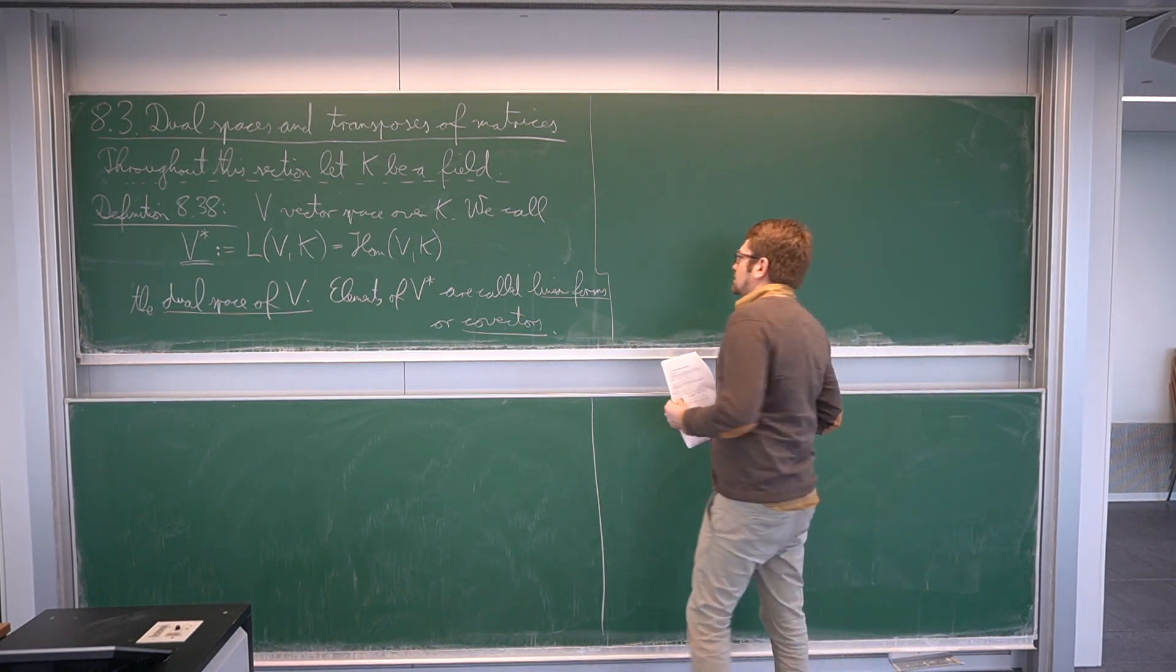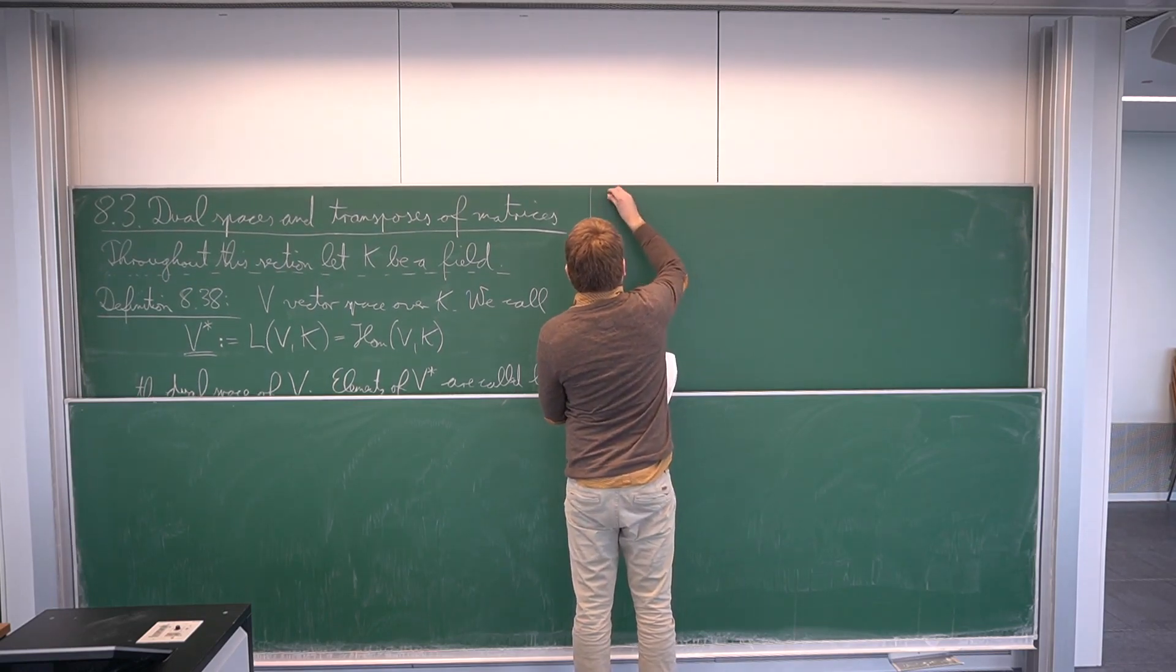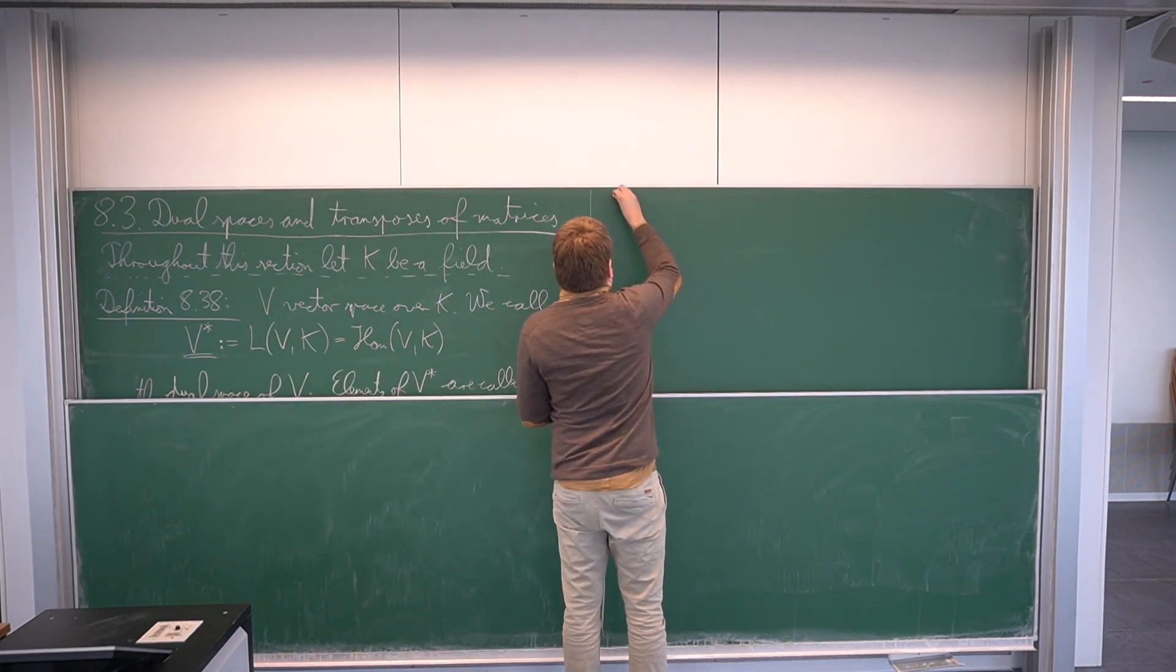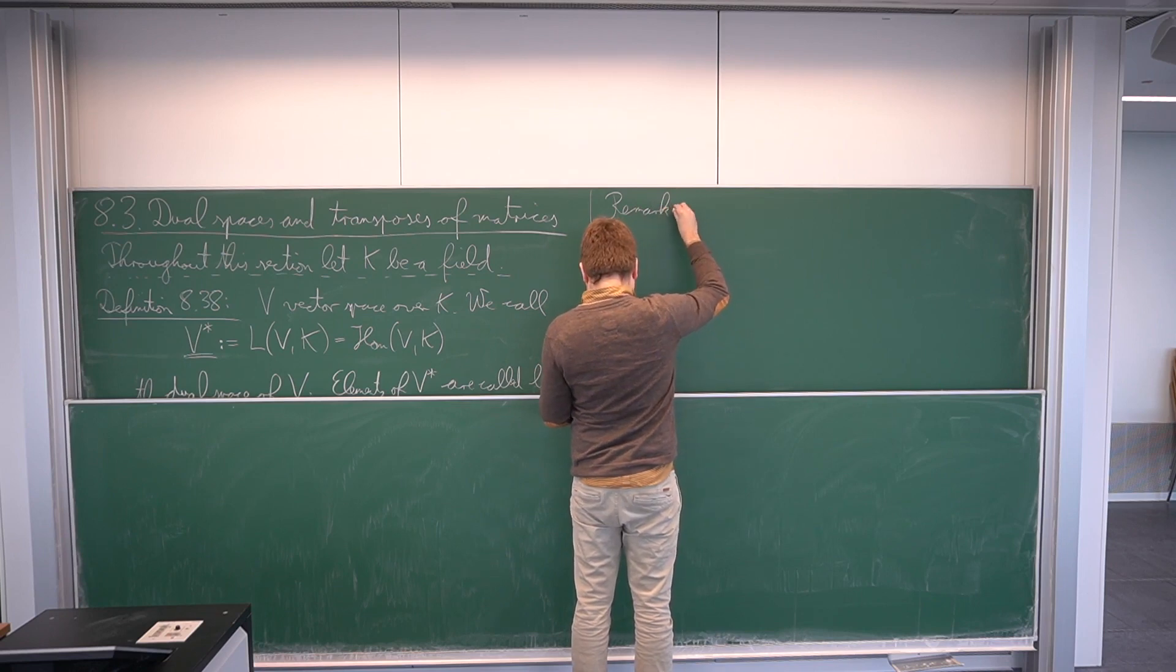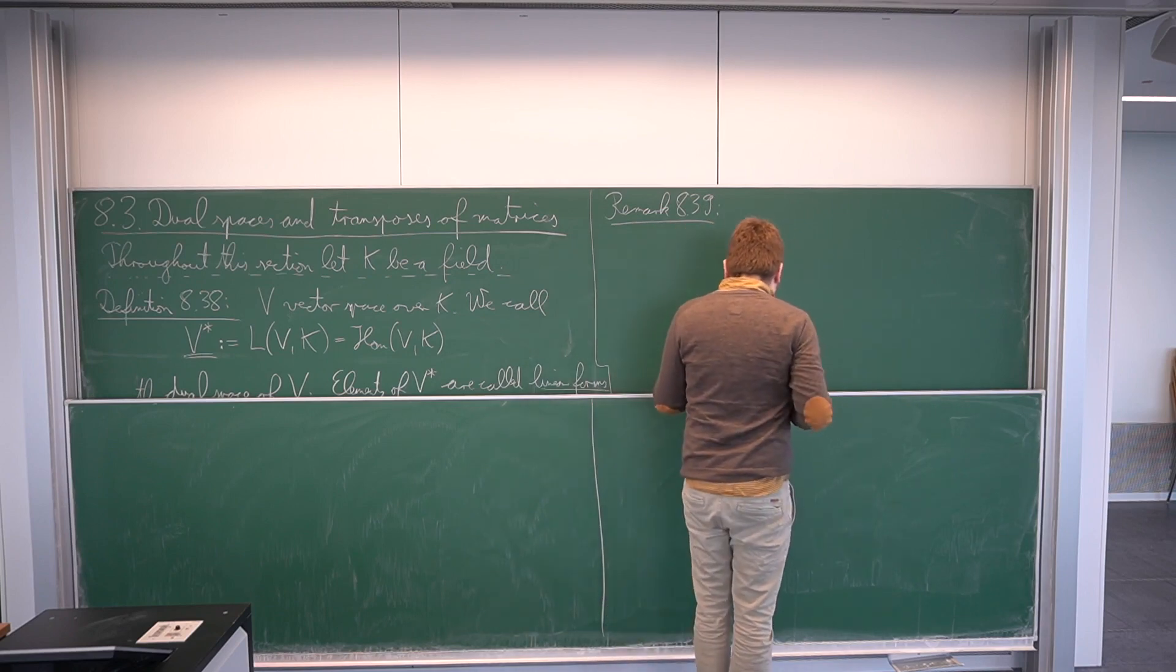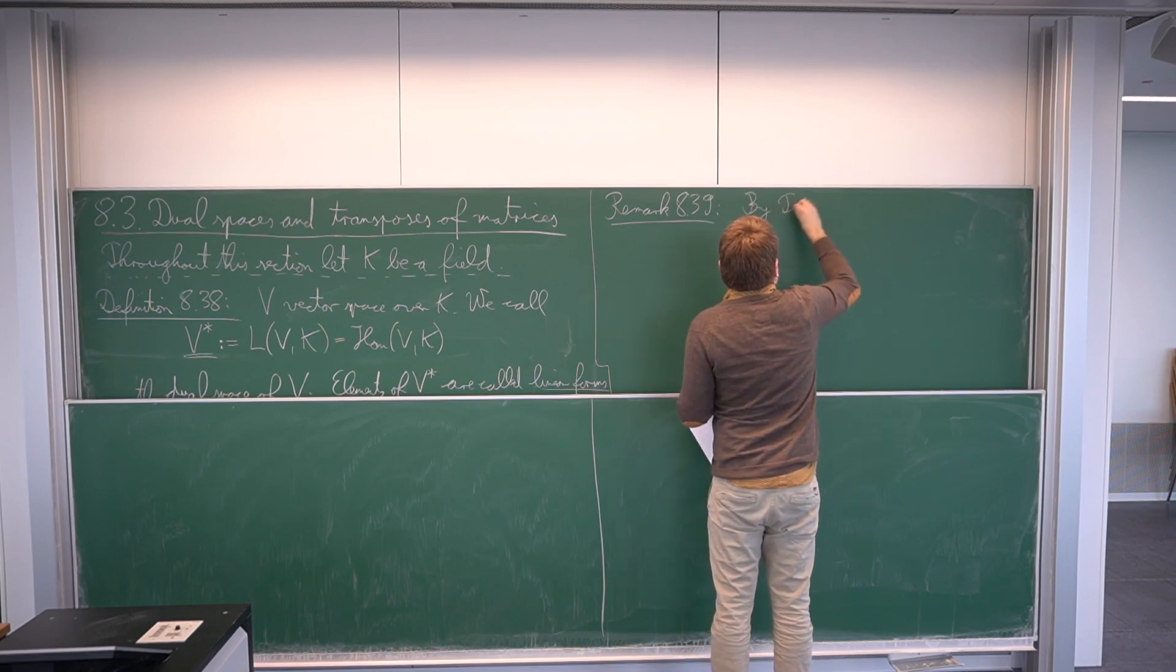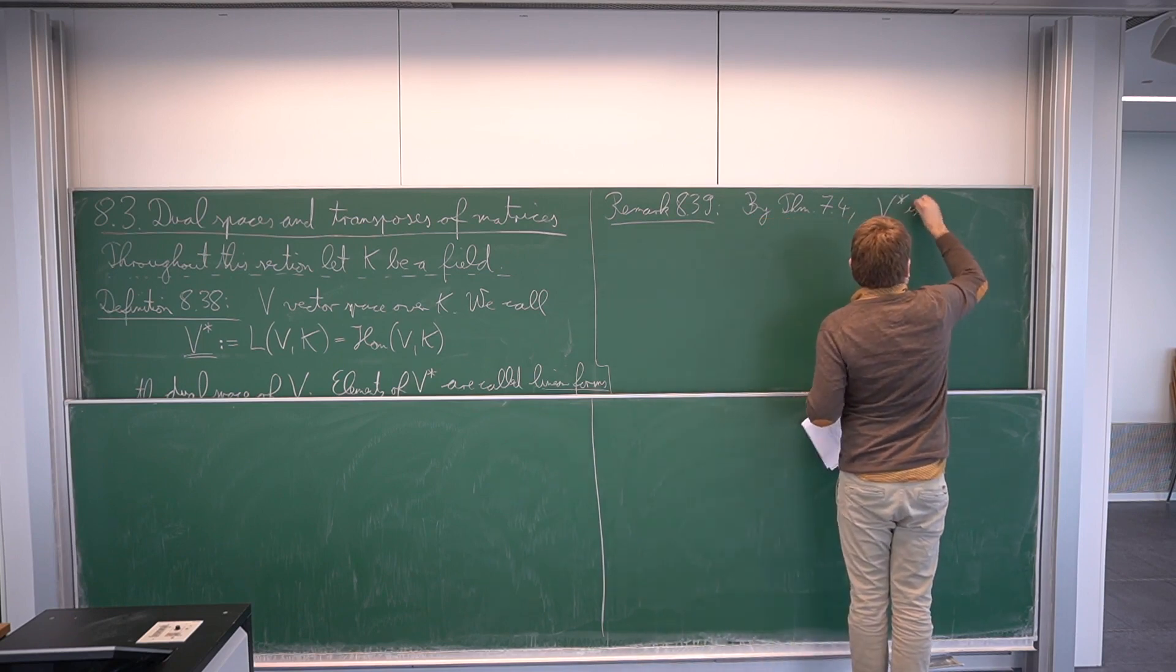So far, so good. We can imagine what this is. And we have seen that this is a special case of the space of linear maps between two vector spaces, because k is a vector space over itself. Let me summarize this as remark 839. We've seen that spaces of linear maps are always, again, vector spaces over k. So by theorem 7.4, v star is vector space over k.